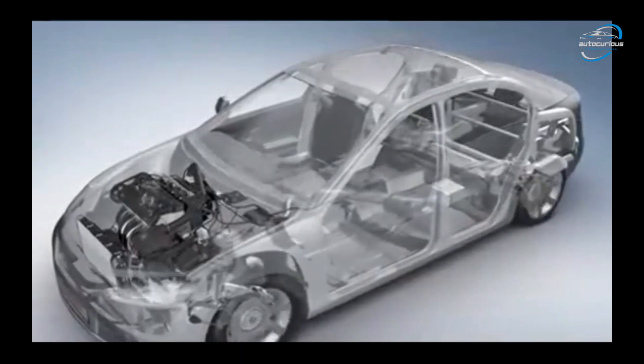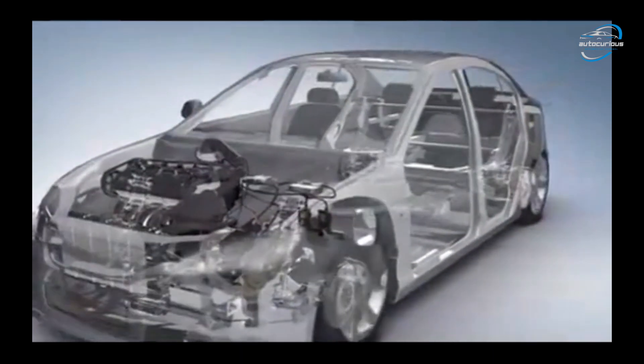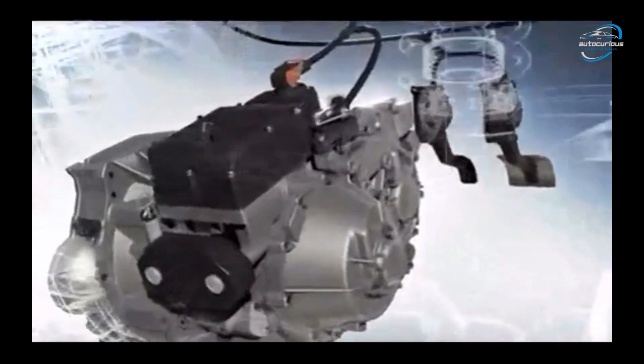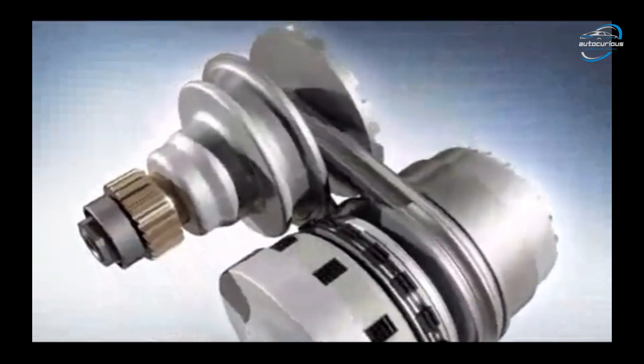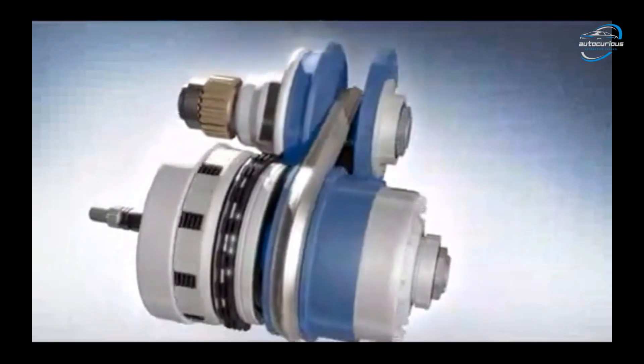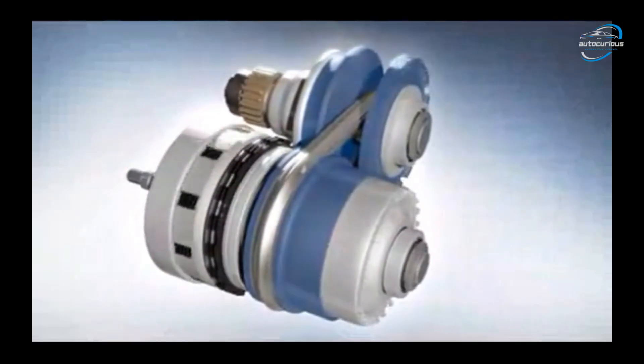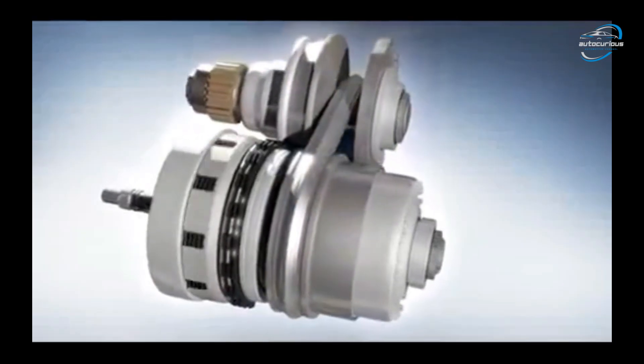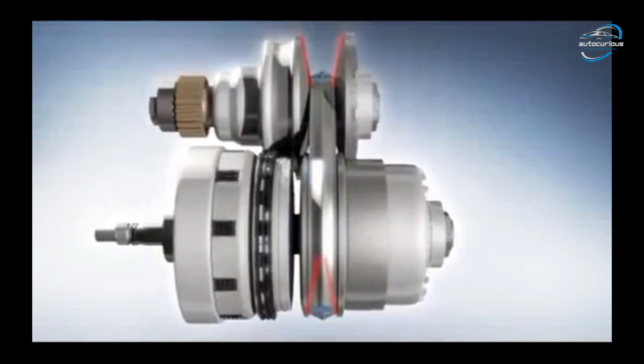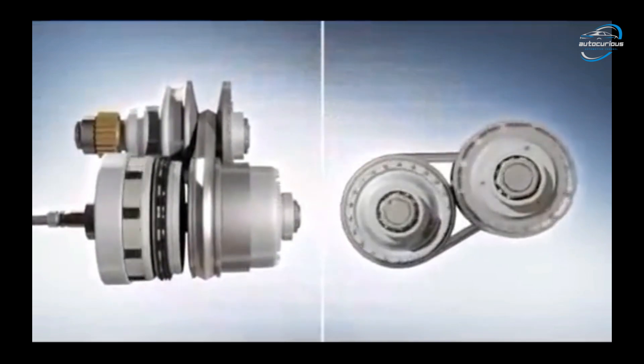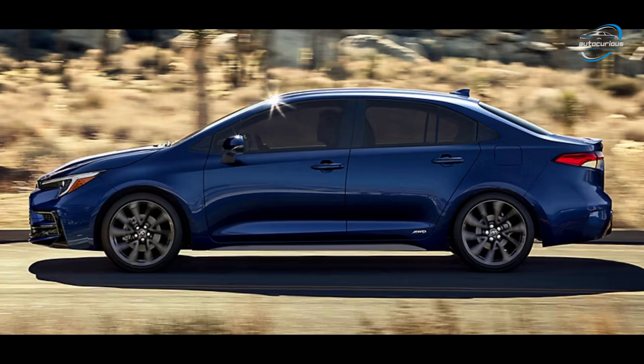Next, we have the CVT, the Continuously Variable Transmission. CVTs don't use traditional gears at all. Instead, they use a pair of pulleys and belt to provide infinite range of gear ratios. This sounds futuristic, right? The pros are smooth and super smooth acceleration, great fuel efficiency, and perfect for city driving. The cons are it is not as sporty or engaging, that rubber band effect we can feel when we accelerate. You'll find CVTs in cars like Honda City, Nissan Magnite, or Toyota Corolla Hybrid.